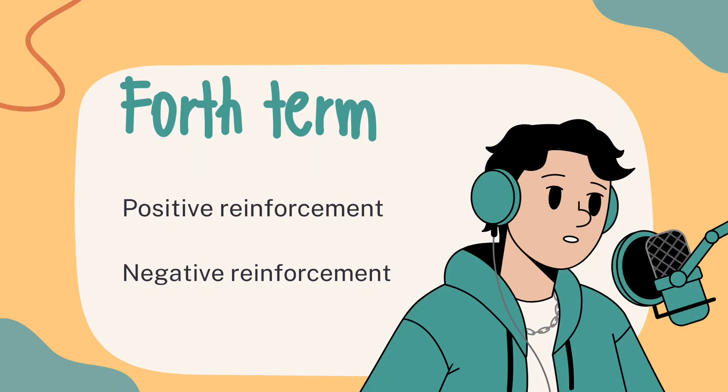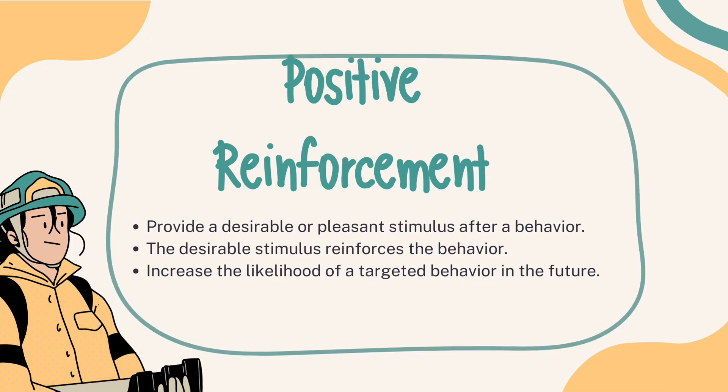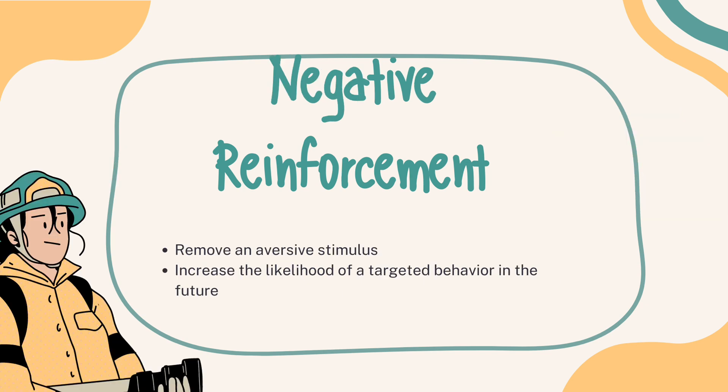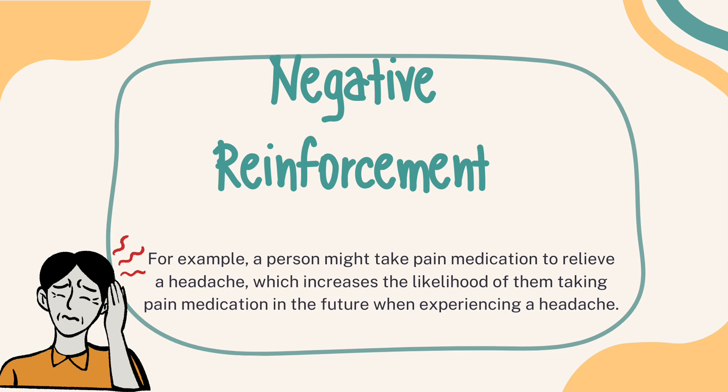The fourth term is positive and negative reinforcement contingencies. Positive reinforcement is a type of consequence in which a behavior is followed by the addition of a desirable stimulus or reward, increasing the likelihood of the behavior being repeated in the future. For example, a child might receive a piece of candy for finishing their homework, which increases the likelihood of them completing their homework in the future. Negative reinforcement, on the other hand, is a type of consequence in which a behavior is followed by the removal of an aversive stimulus. For example, a person might take pain medication to relieve a headache, which increases the likelihood of them taking pain medication in the future when experiencing a headache.